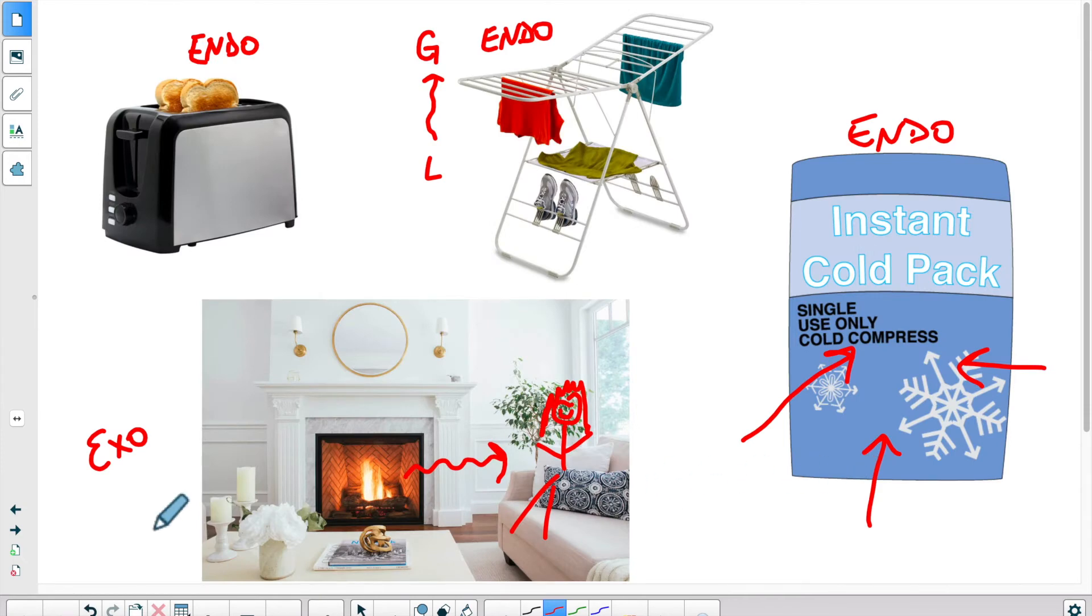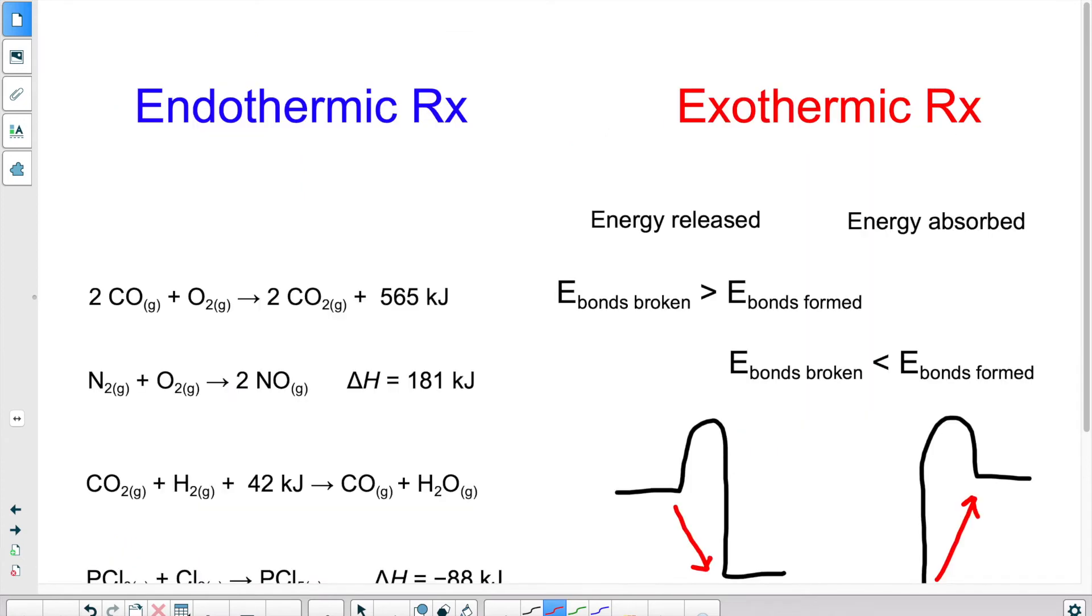So, that's the first exercise. Next exercise. We have a column for endothermic and a column for exothermic. What I want to do here is actually drag these items around and put them in the correct column. So, endothermic. Is energy released or energy absorbed? If you said absorbed, you are correct. So, energy absorbed would go here and energy released would go here.